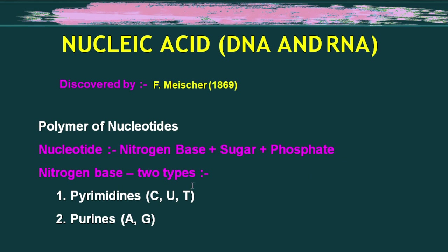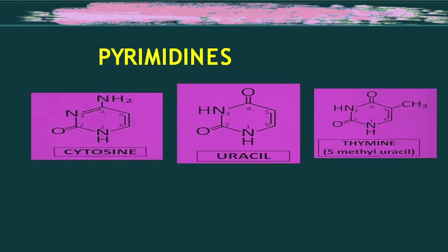Nitrogenous bases present in nucleic acids include pyrimidines and purines. In purines, we have adenine and guanine. In pyrimidines, we have cytosine, uracil, and thymine. Uracil is present in RNA, while in DNA, cytosine and thymine are present.